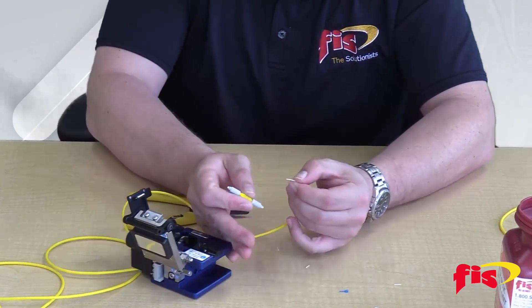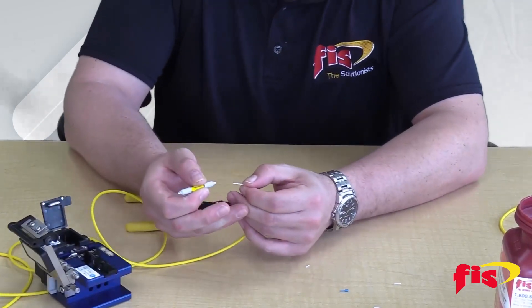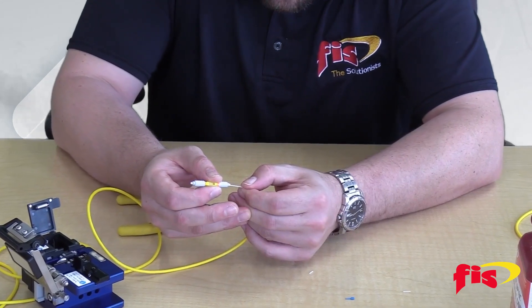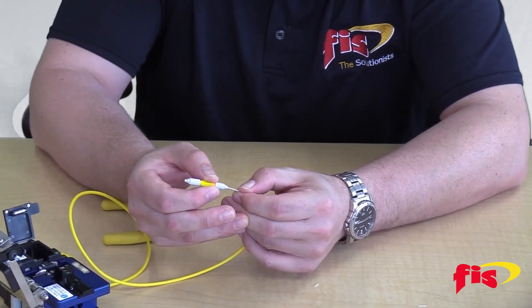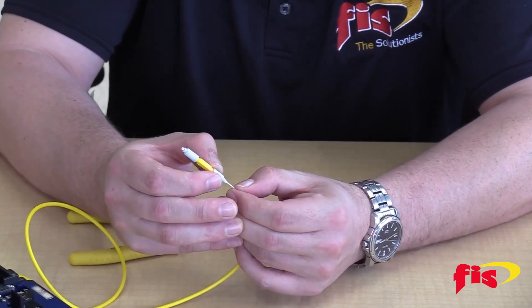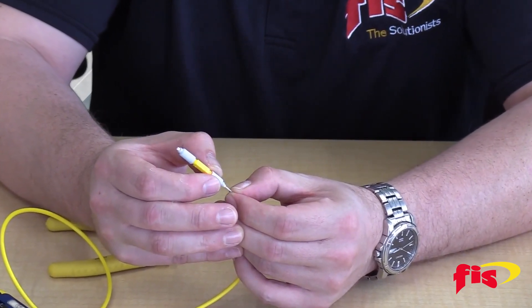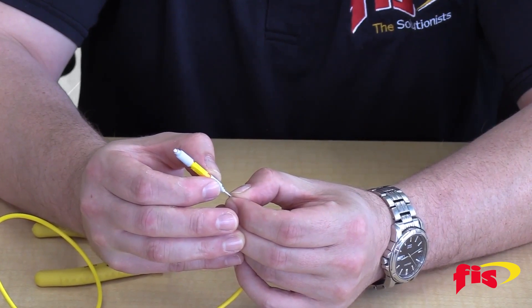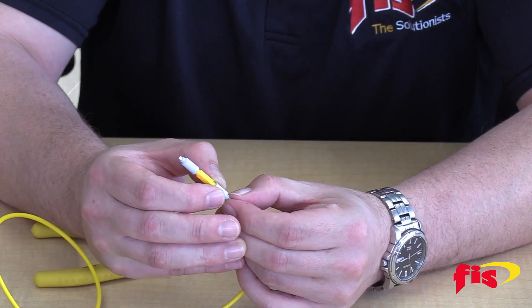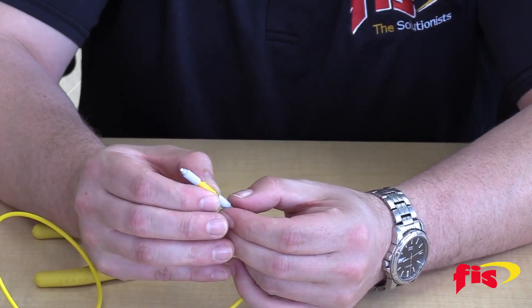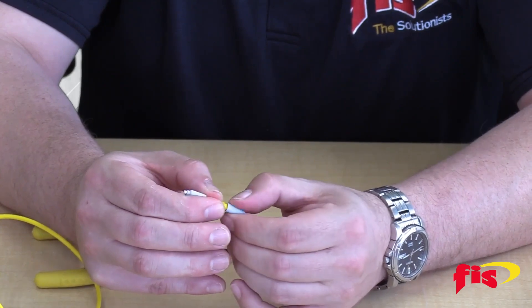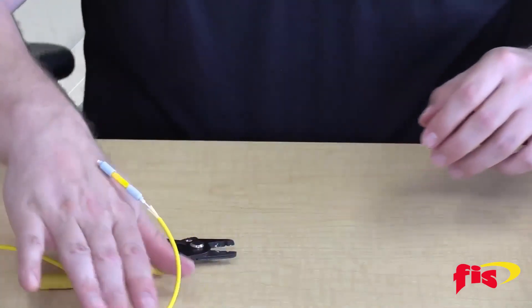Remember to turn about halfway counterclockwise the gray thumb screws on each side to open up the capsule. Then insert the fiber as straight and forward as possible until the fiber goes all the way through into the middle of the capsule, and then tighten the thumbscrew to lock the fiber into place.